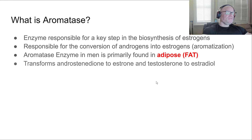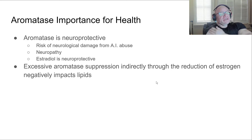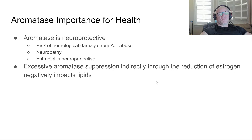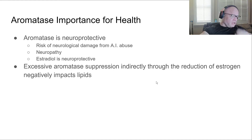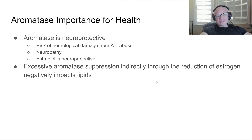Aromatase also transforms androstenedione into estrone and testosterone into estradiol — those are the different types of estrogens. You don't want to completely crush your estrogen; it's a fine balance you have to walk. Aromatase and estrogen are neuroprotective, and long-term aromatase inhibitor abuse can lead to neuropathy and nerve damage. Estrogen is also necessary for bone health — without enough of it, you can end up with osteoporosis.